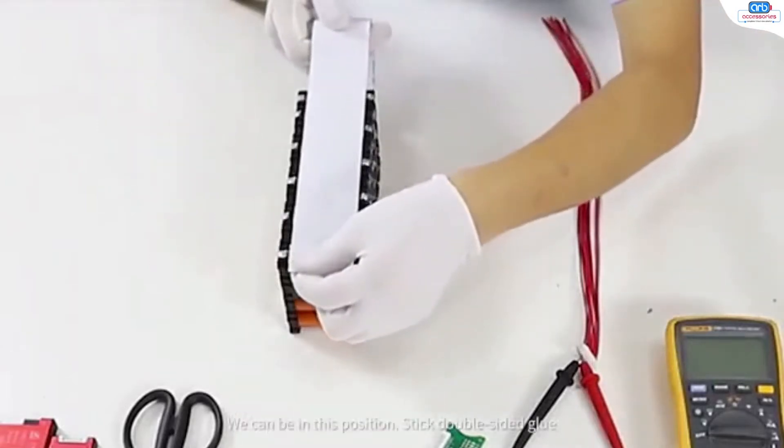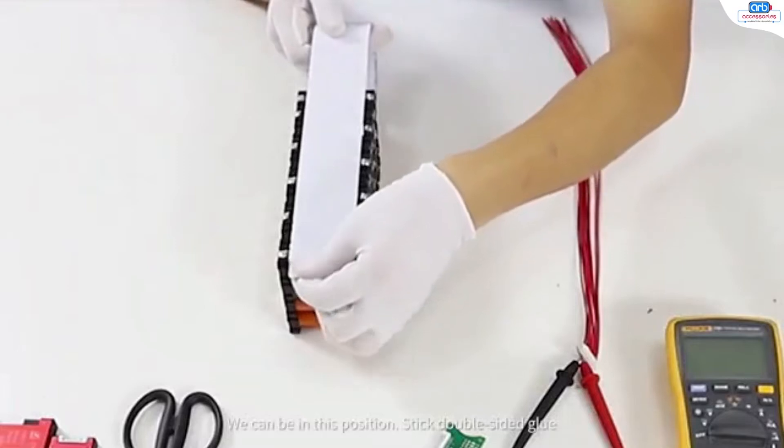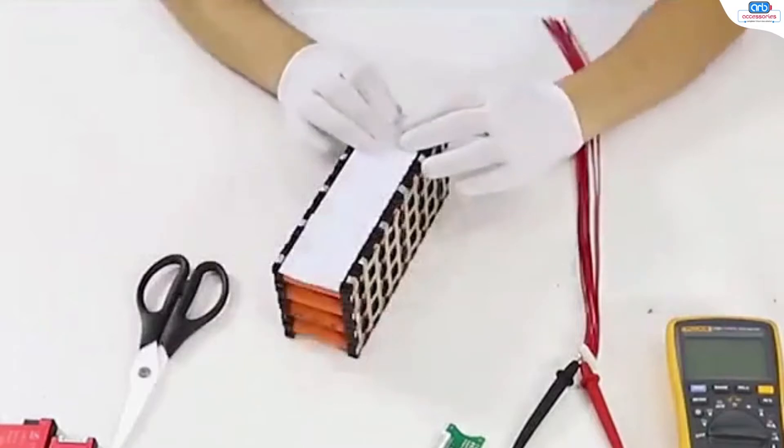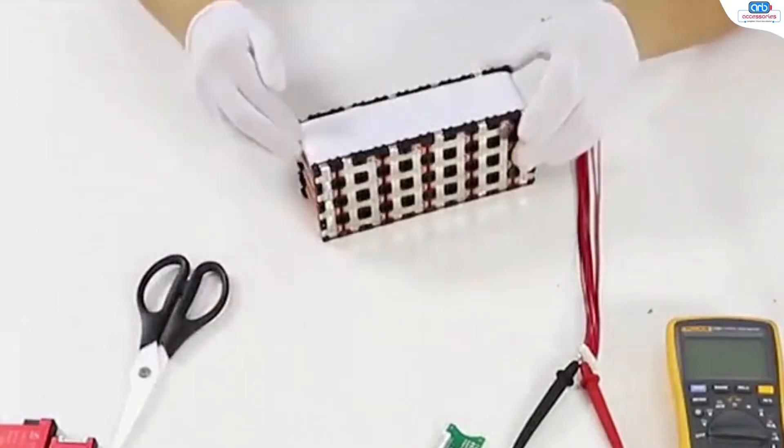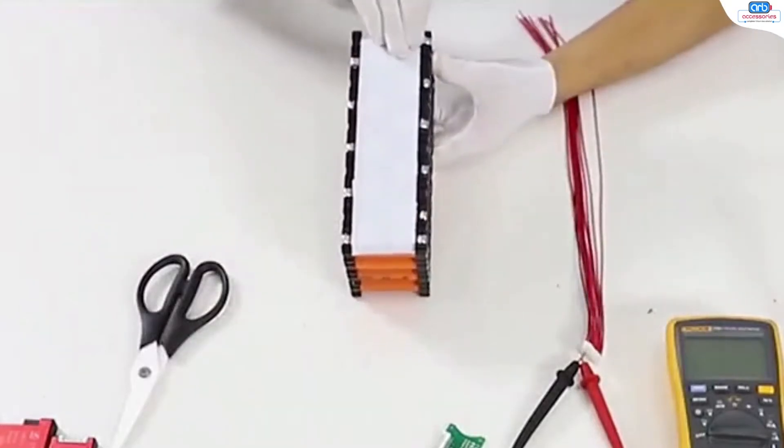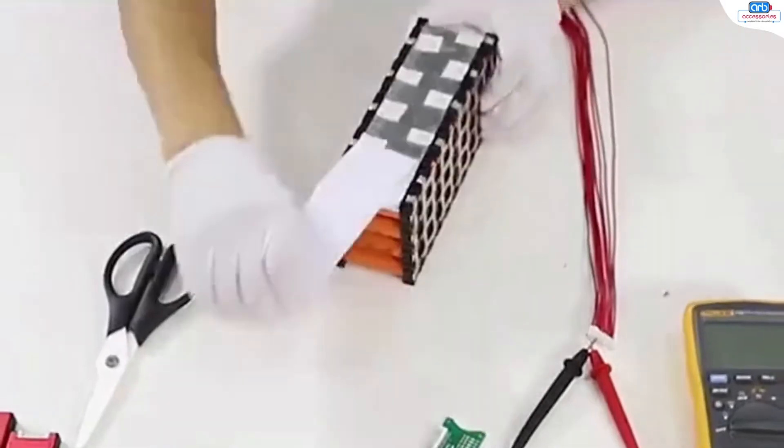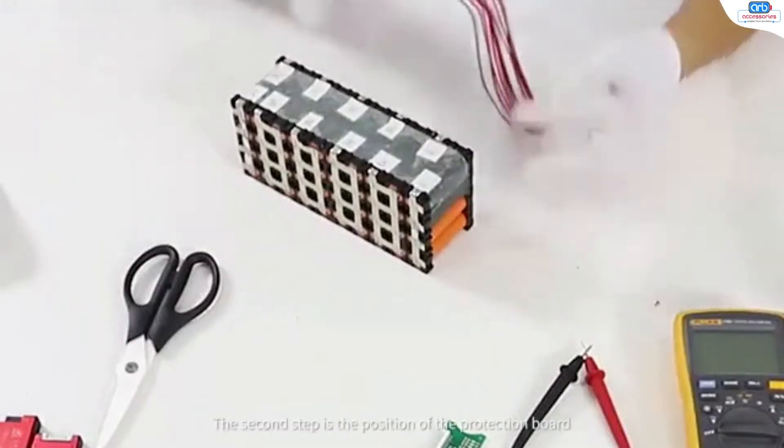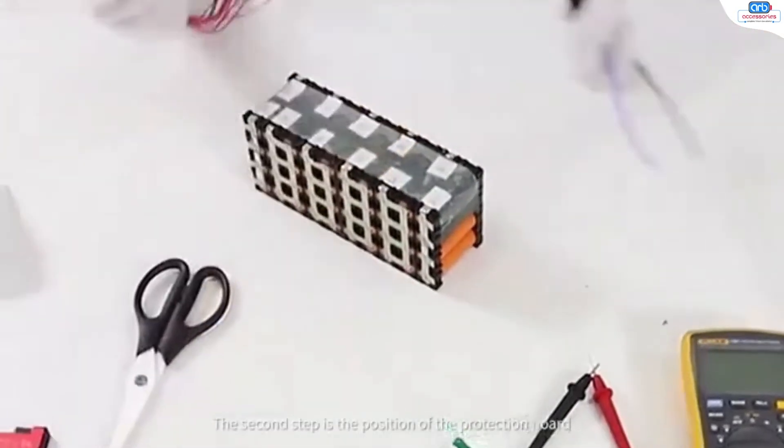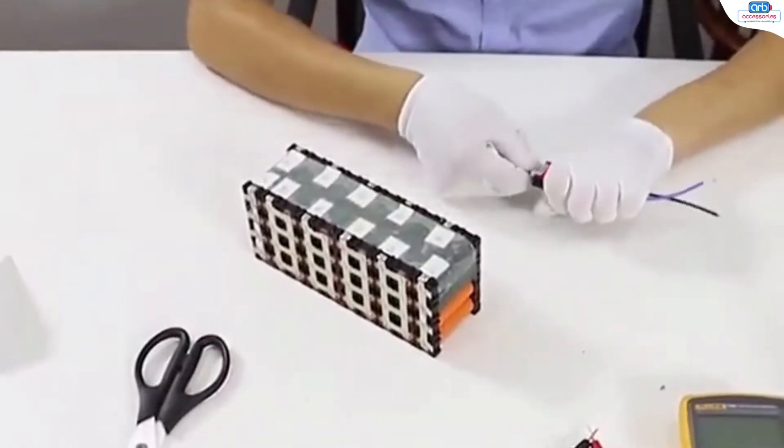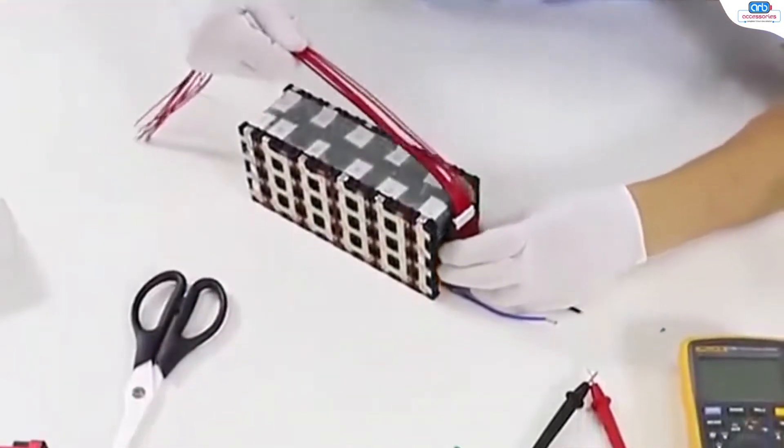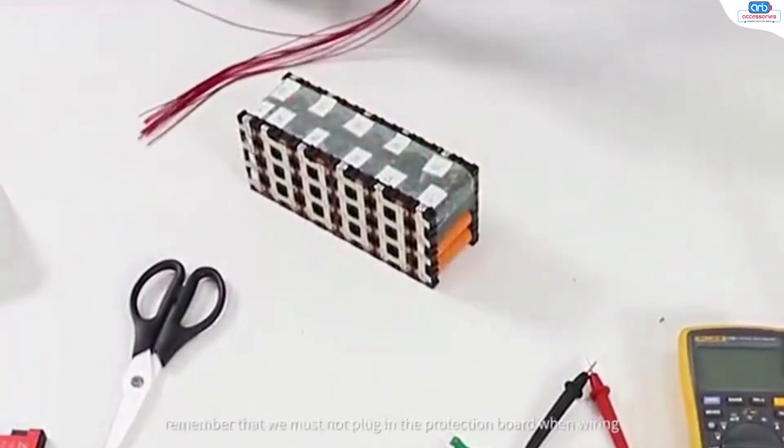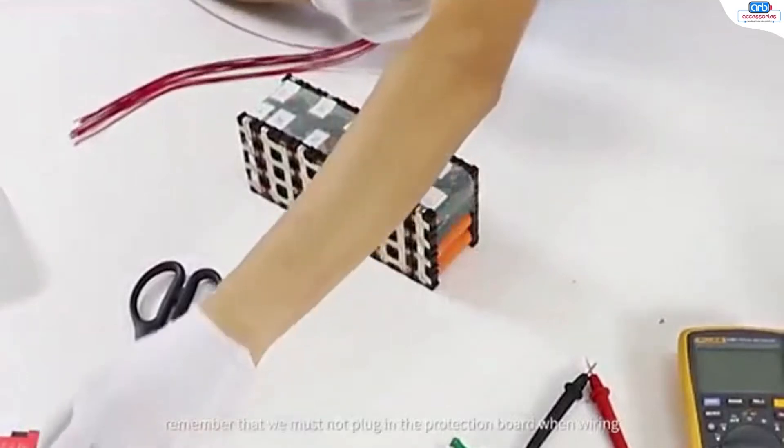We can be in this position, stick double-sided glue. The second step is the position of the protection board. After the better position, remember that we must not plug in the protection board.